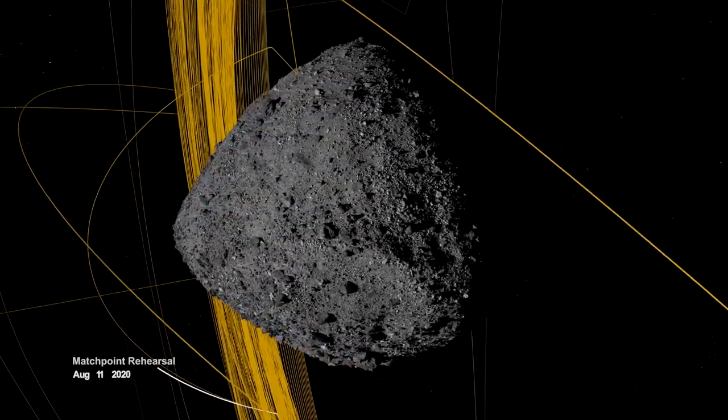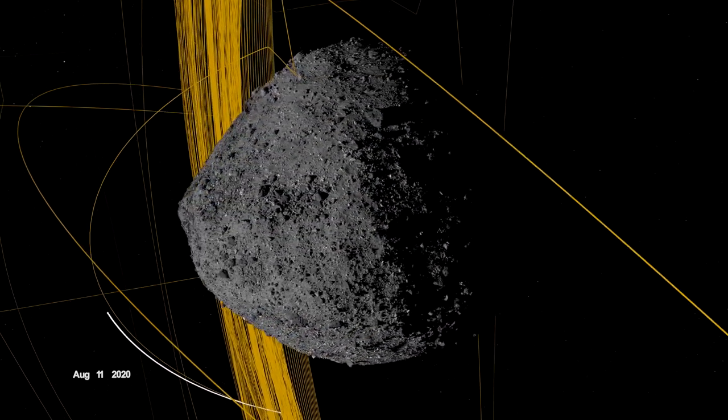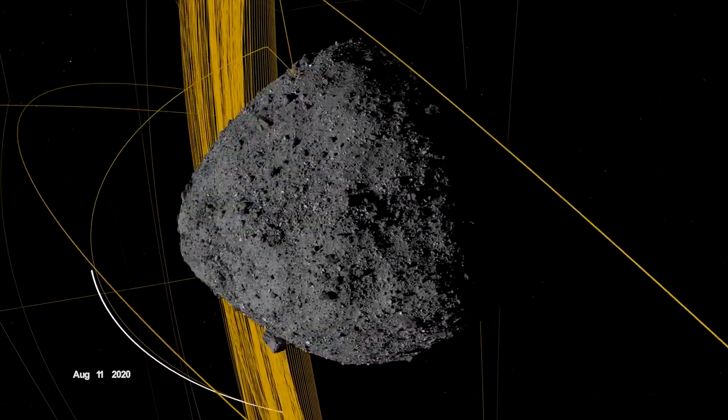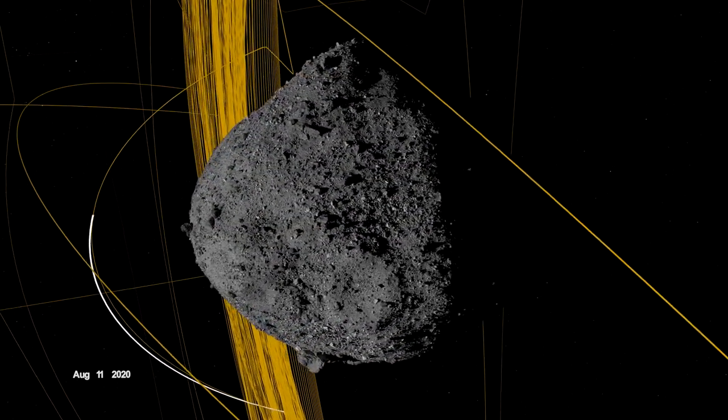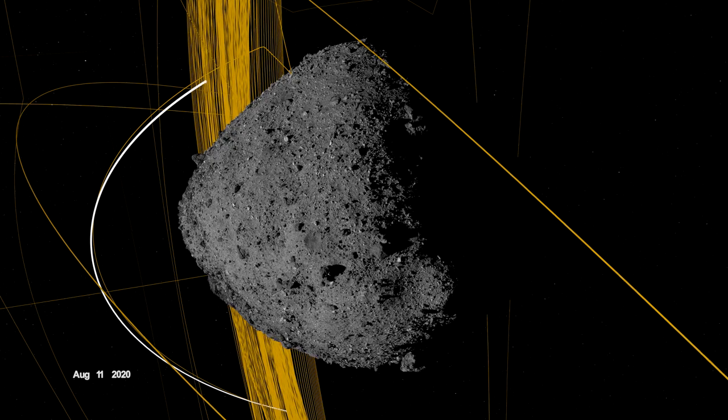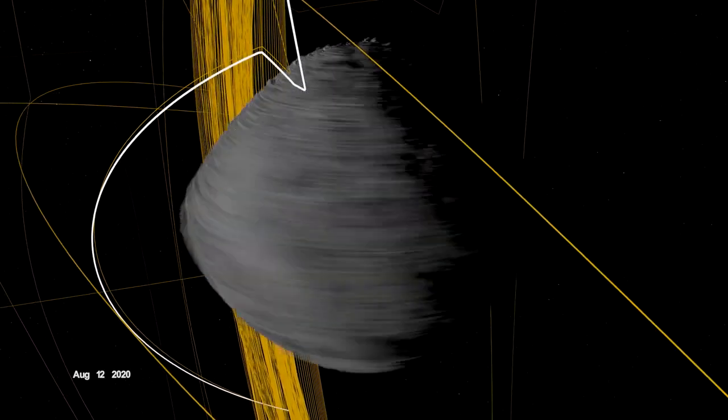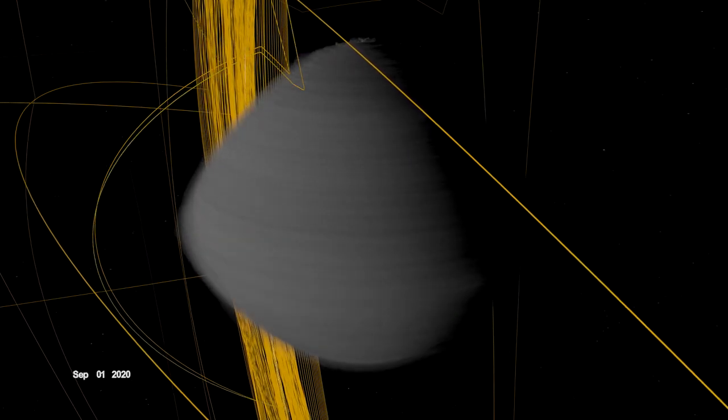On August 11th, OSIRIS-REx departed its home orbit and made a four-hour traverse to Bennu's northern hemisphere, retracing its earlier path. After performing the checkpoint engine burn to begin its descent, it made a second engine burn called Matchpoint to match Bennu's rotation before backing away at an altitude of approximately 40 meters.